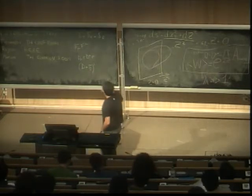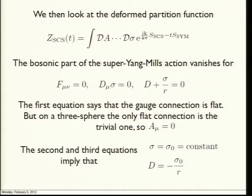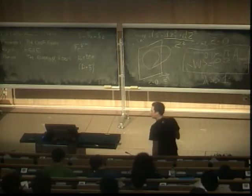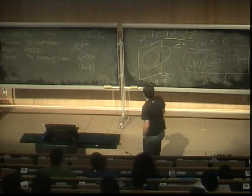So we now look at this supersymmetric partition function. We have our super-Chern-Simons theory with its coupling, and then we perturb with this. When T goes to infinity, the path integral will localize on the zero locus of the bosonic part — that's why we choose a positive definite bosonic part. Since the action is a sum of squares, each term has to vanish independently, giving three equations: F_μν = 0, D_μ σ = 0, and D + σ/R = 0.